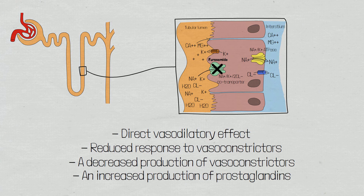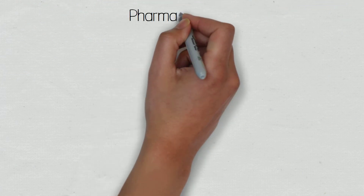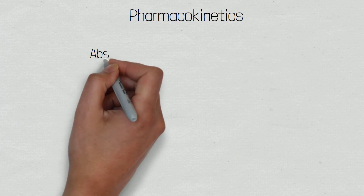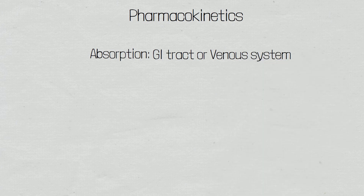Now that we have an understanding of how feruzamide works, let's move on to look at the pharmacokinetics. Feruzamide is either absorbed by the GI tract if given orally, or is absorbed directly into the venous system if given intravenously. Oral administration will decrease the amount of drug that reaches systemic circulation and therefore the kidney. This is referred to as the bioavailability of the drug, as opposed to intravenous feruzamide where 100% of the drug reaches systemic circulation by bypassing the liver.